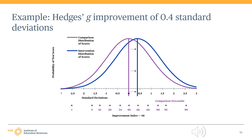In our example calculation, we calculated a Hedges G effect size of 0.4 standard deviations. This effect size translates to an improvement index of 16 percentile points. Namely, with an effect size of this magnitude, the average comparison group student at the 50th percentile would be expected to score at the 66th percentile if they had received the intervention. The difference between 66 and 50 is 16, so the improvement index is 16 percentile points.